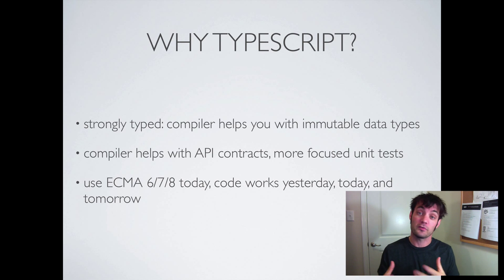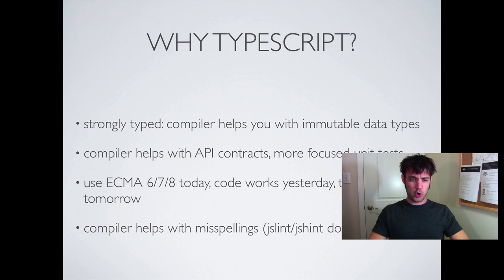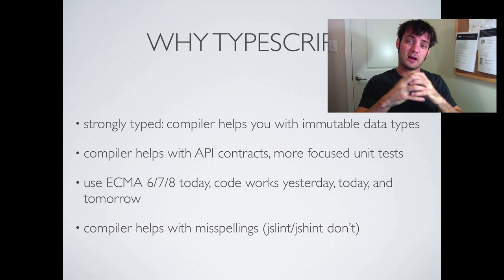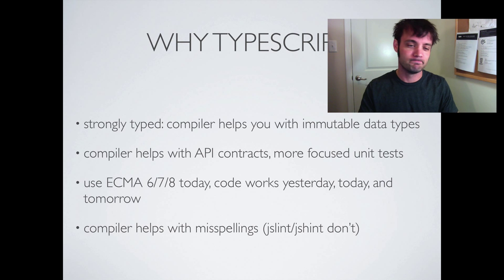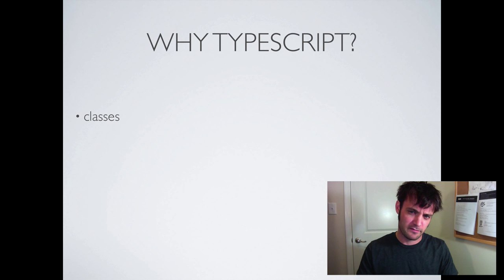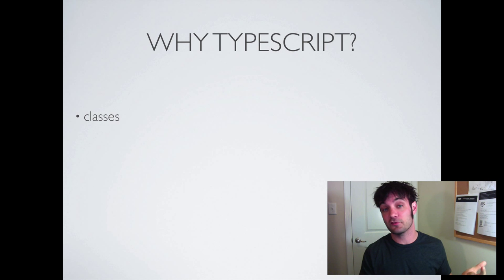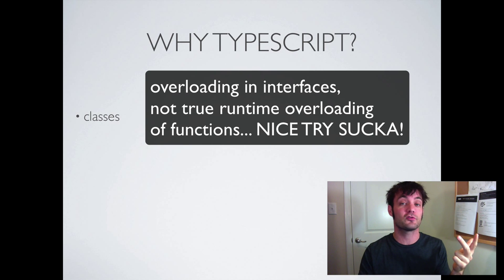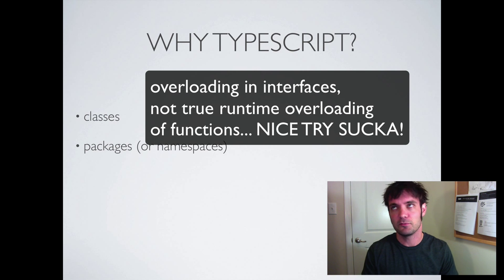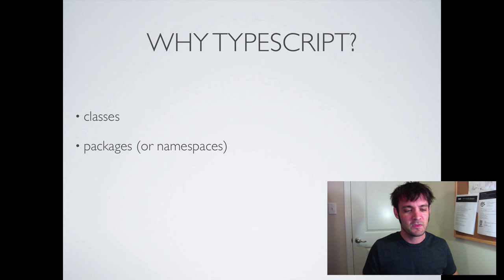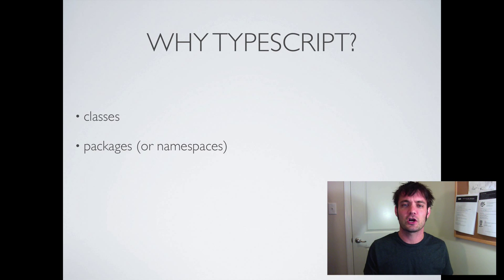Number four: the compiler helps with misspellings — with these contractual obligations it's pretty cool. Number five: obviously classes, but classes from an inheritance perspective, a superclass and subclass perspective, and from an overloading versus overwriting perspective. Packages or namespaces — they're not really namespaces the way they're implemented; it's a little confusing, getting better.